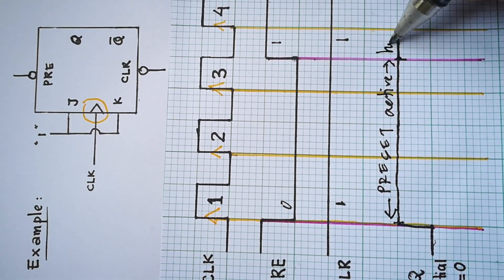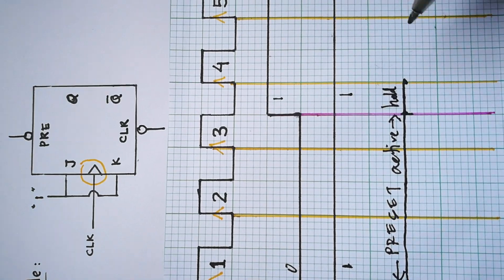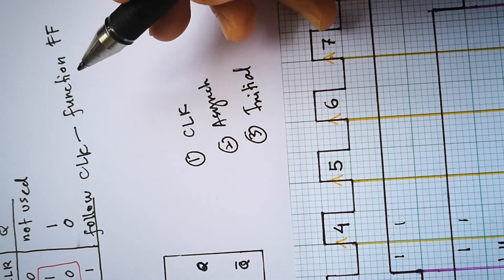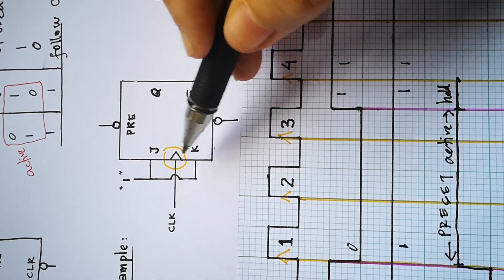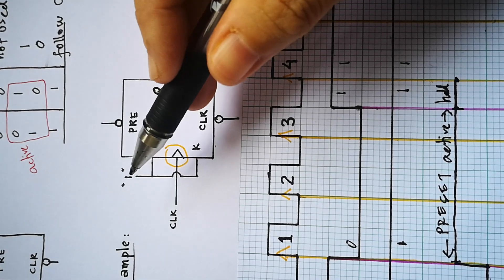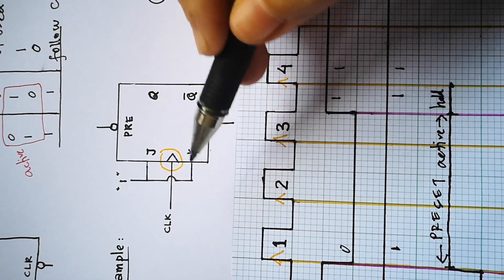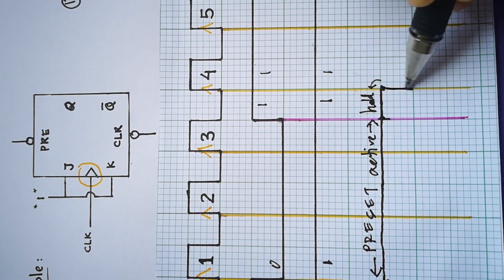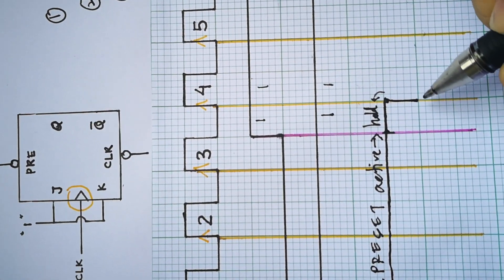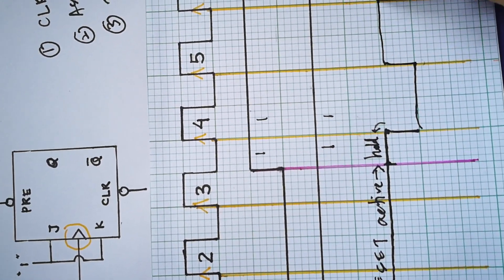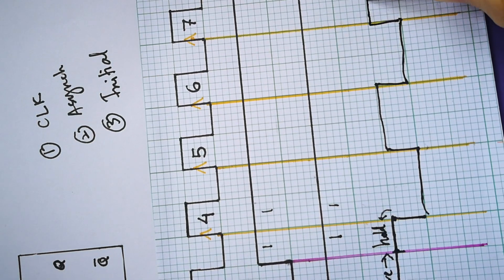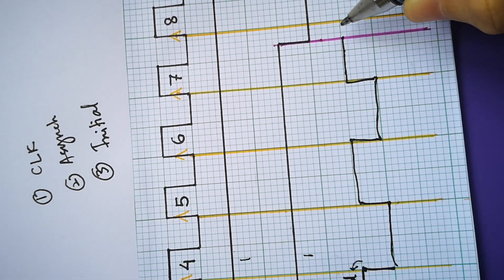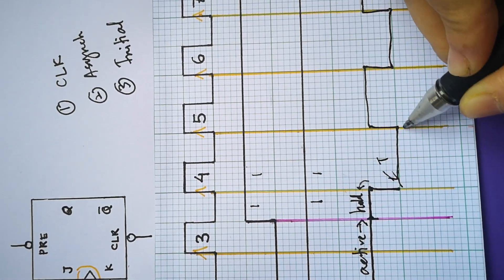Here it holds until it sees the clock. When PRE=1, CLEAR=1, it follows the clock, meaning it functions as a flip-flop. The flip-flop is JK with J and K both connected to 1, so for JK with J=K=1, it will toggle. Toggle from the previous value: previous was 1, so it becomes 0. It continues toggling until it sees the next transition of PRE or CLEAR, stopping at that pink line — this is the toggle part.